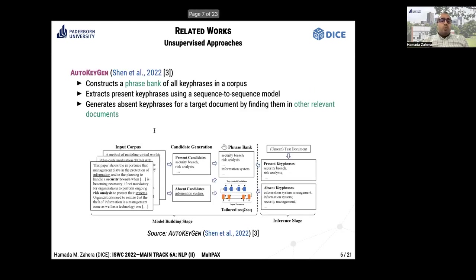Auto-generation is an unsupervised approach. It also employs a sequence-to-sequence model to extract present keyphrases and constructs a phrase bank from all keyphrases in the dataset to generate absent ones. The idea is that absent keyphrases of a target document can be obtained from other relevant documents.